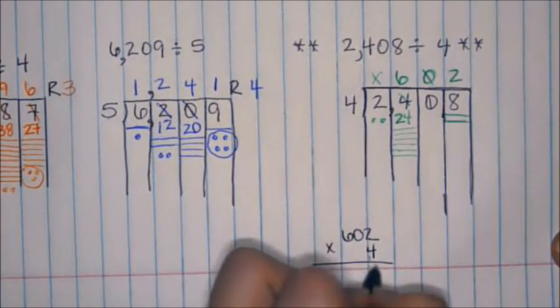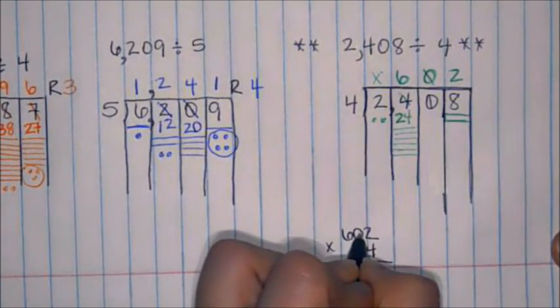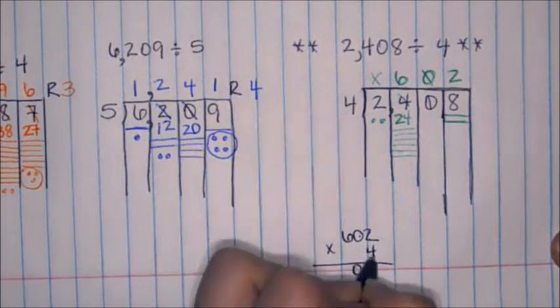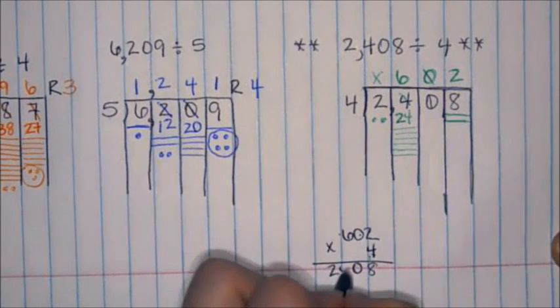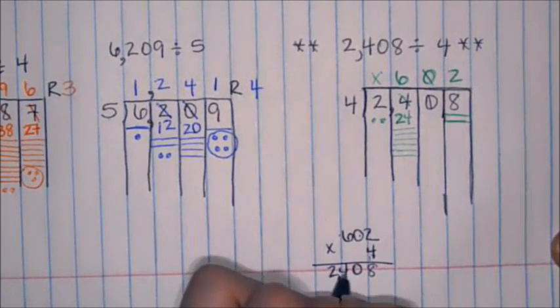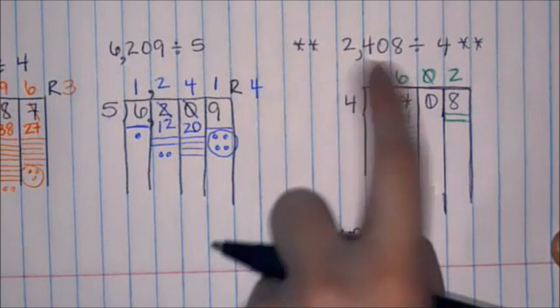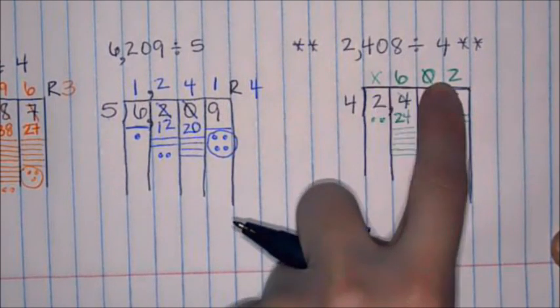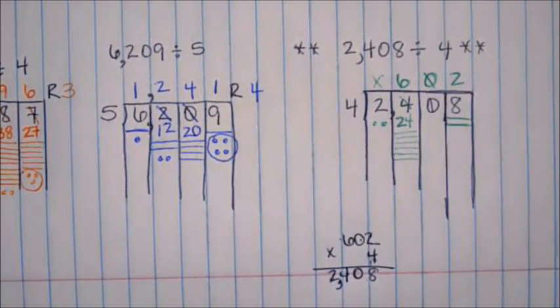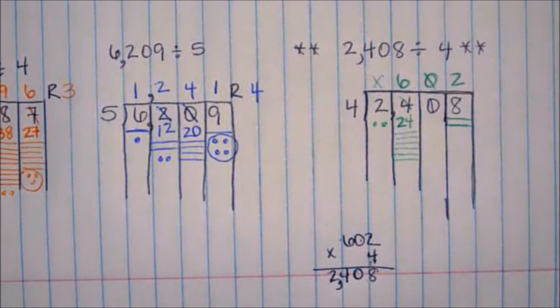I know 4 times 2 is 8. 4 times nothing is nothing. So I put a 0 here. And 4 times 6 is 24. 2,408. That is the same number that I got there. So I know that this quotient is correct. Good luck with this. And I'm sure we will be working more on this together so that we can make sure that we clear up any confusions.